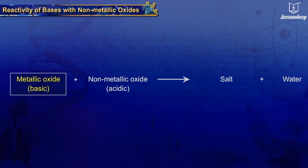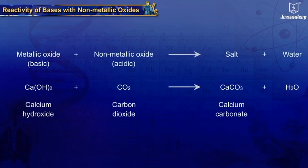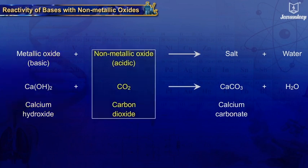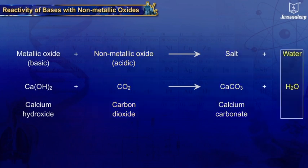Metallic oxides are basic in nature and non-metallic oxides are acidic. Hence, these react together to form salt and water. For example, calcium hydroxide, which is a basic or metallic oxide, reacts with carbon dioxide, an acidic non-metallic oxide, giving salt and water.